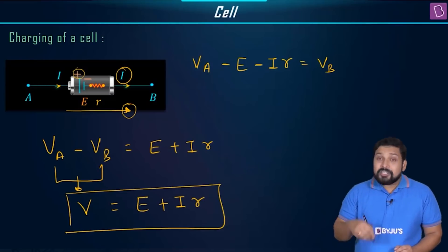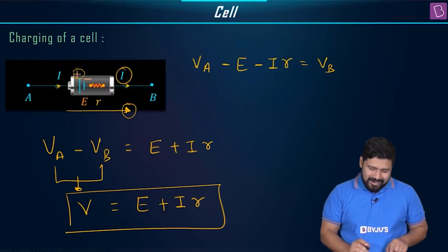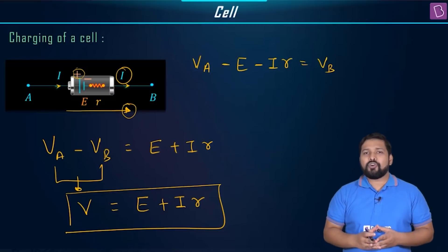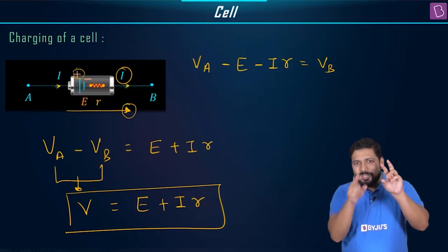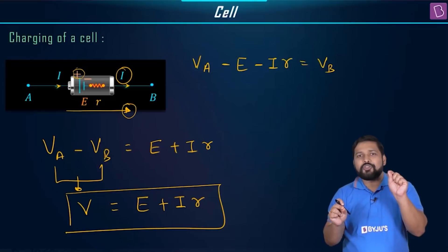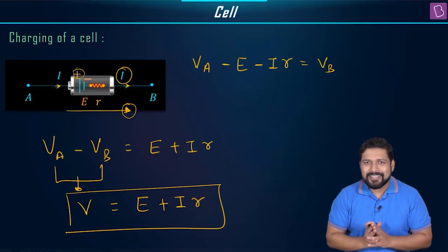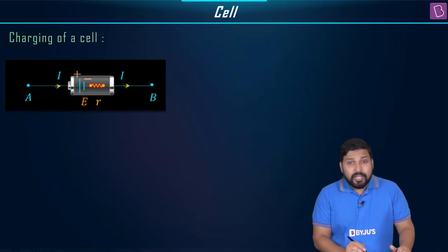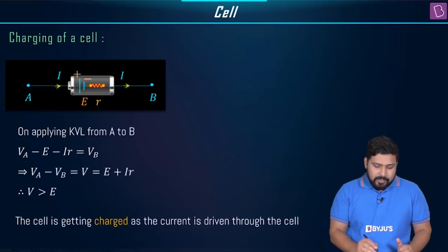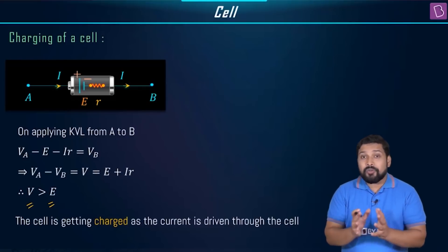In discharging you had V = E − Ir, so terminal potential was less than EMF. But while charging, V = E + Ir, so terminal potential is more than EMF. This is obvious: if you want to charge a 12V battery, the charger must have a higher potential — say 16V. Always be careful whether the question gives a discharging or charging condition.